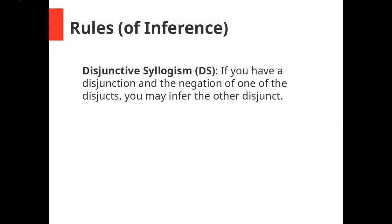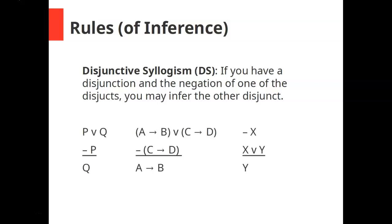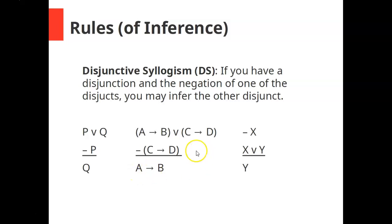The first rule we're going to add is called disjunctive syllogism, or DS for short. It says if you have a disjunction and the negation of one of the disjuncts, you may infer the other disjunct. For example, if you have P or Q and not P, you're allowed to infer Q. In the second example, you have (if A then B) or (if C then D), and you have not (if C then D), so you're allowed to infer if A then B.